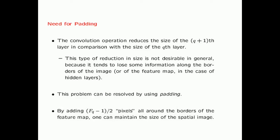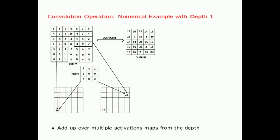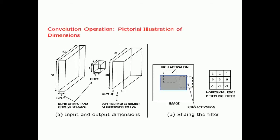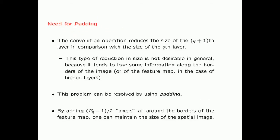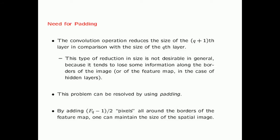One point is that the convolution operation reduces the size of the Q+1 layer compared to the Q-th layer. For example, a 7 cross 7 input becomes 5 cross 5 after convolution, and a 32 cross 32 input becomes 28 cross 28. This is undesirable, and it also tends to lose information along the borders of the image. This problem can be resolved by using padding.